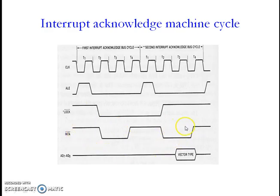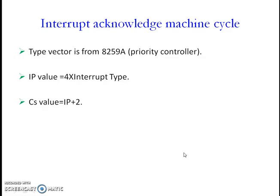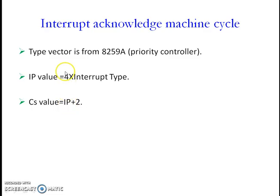In the second interrupt acknowledge machine cycle, the interrupting device gives the type vector ISR to the 8086 microprocessor. Based on the type vector given by the interrupting device, the microprocessor calculates the ISR address — it calculates the IP value by multiplying the type by 4, and the CS value by adding 2 to the IP value. CS and IP now indicate the ISR address for that particular hardware interrupt.